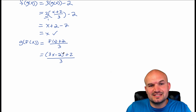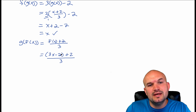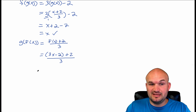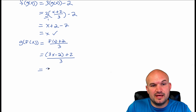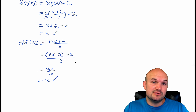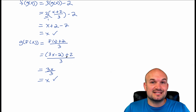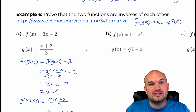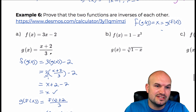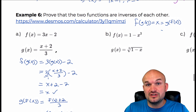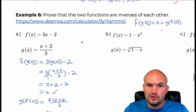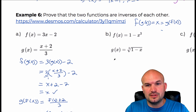The parentheses can go away since there's no subtraction or multiplication to apply. The negative two plus two gives me zero, leaving me with three x over three, which divides into x. So you can see the composition both ways proves x. I also provided a link to Desmos where these two graphs show symmetry about the y equals x line, and we'll visit those graphs after all three examples.